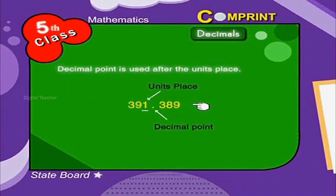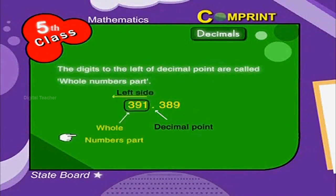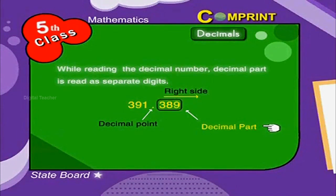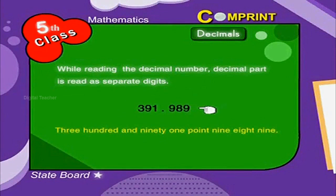The decimal point is placed after the units place. The digits to the left of the decimal point are called the whole number part. The digits to the right are called the decimal part. While reading decimal numbers, the decimal part is read as separate digits. For example, 391.989.